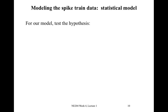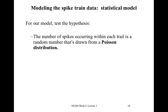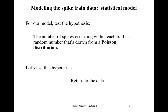For our statistical model, we'll test the following hypothesis: the number of spikes occurring within each trial is a random number drawn from a Poisson distribution. The number of spikes occurring within each trial — something we computed last week — is a random number drawn from some distribution, and our goal is to test this hypothesis by looking at our data.